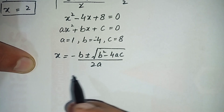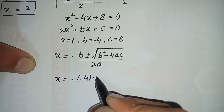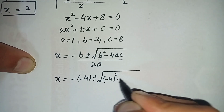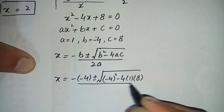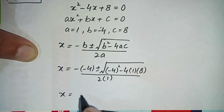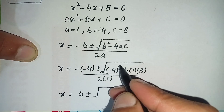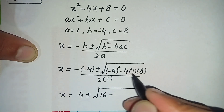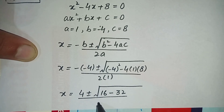Using the quadratic formula: x equals minus b plus or minus square root of (b² minus 4ac), divided by 2a. Substituting a equals 1, b equals minus 4, c equals 8: x equals 4 plus or minus square root of (16 minus 32) divided by 2, which gives x equals 4 plus or minus square root of minus 16, divided by 2.